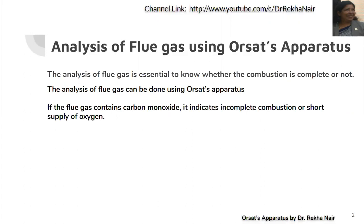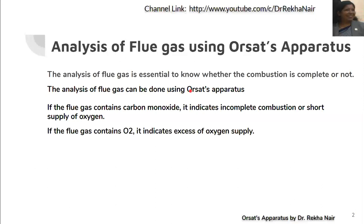If the combustion is not complete, then carbon will react with oxygen to form carbon monoxide, not carbon dioxide. It means that if carbon monoxide is present in the flue gas, it indicates incomplete combustion or a short supply of oxygen. If the flue gas contains excess oxygen, it means that excess oxygen supply was given during the combustion process. A large amount of carbon dioxide indicates complete combustion of the fuel.